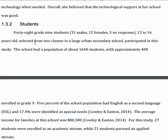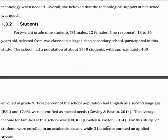Now let's take a close look at the student population. There are 48 grade 9 students, so we know their education level and the number of males and females — five didn't respond. They're 13 to 16 years old, selected from two classes in a large urban secondary school. It goes on to describe the school and the grade 9 population, including that almost one-fifth of students have English as a second language or were identified with special needs, the average income is $80,000, and there were 27 students from an academic stream and 21 from an applied stream.